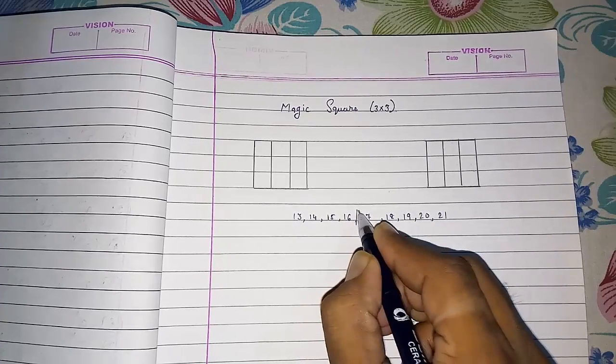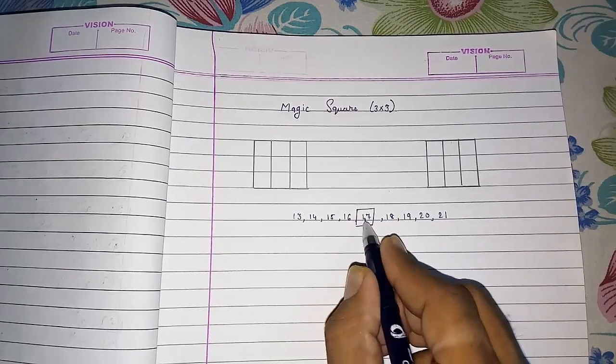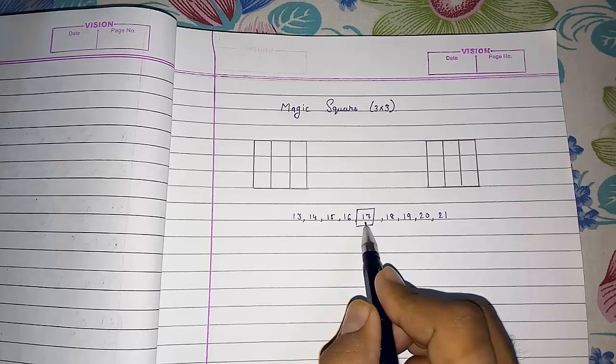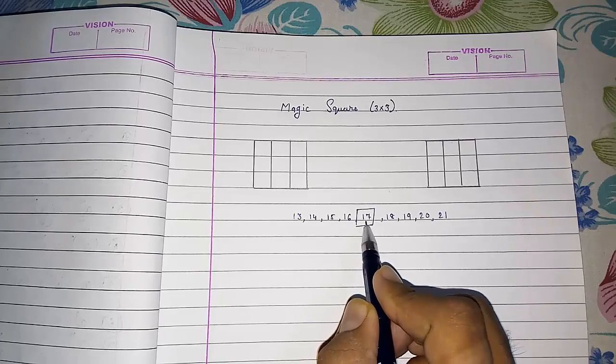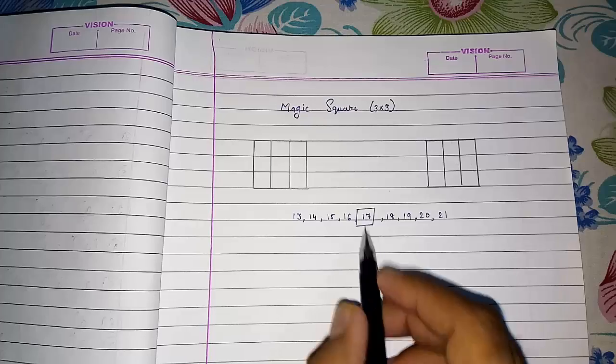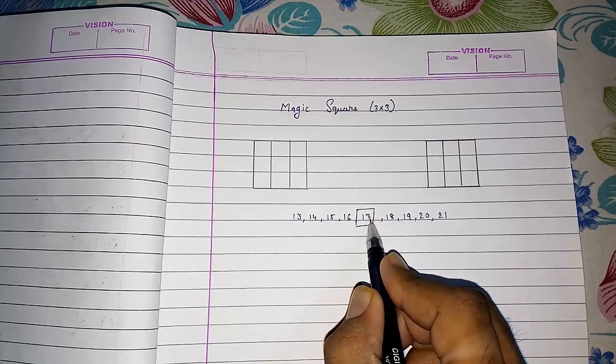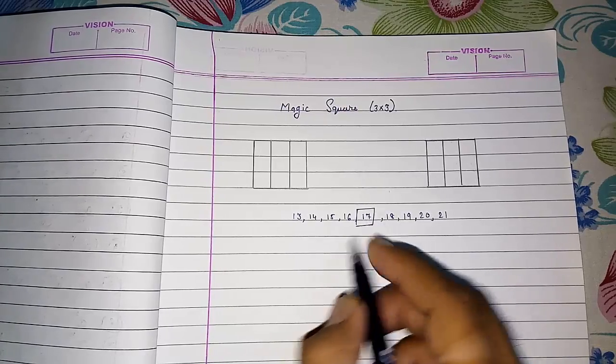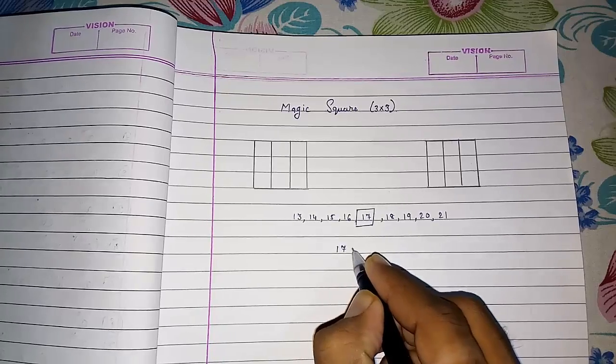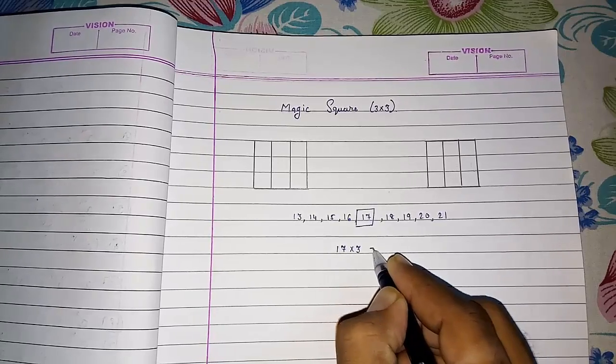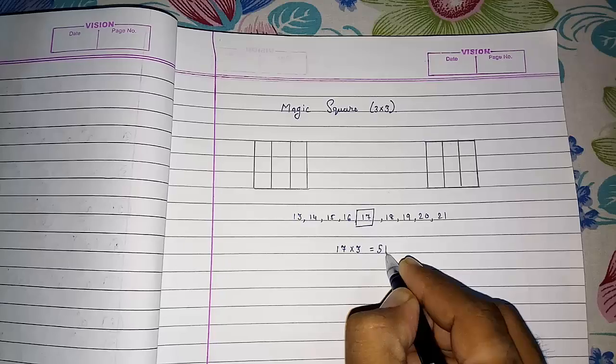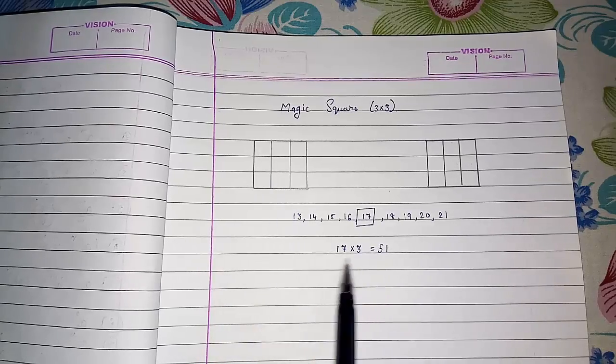We can say or we know that the middle number is 17. This is the middle number. By this, we can say what the sum will be. Multiply this number by 3. The sum will be 3 times 17, which means 17 into 3 equals 51. So the sum will be 51.